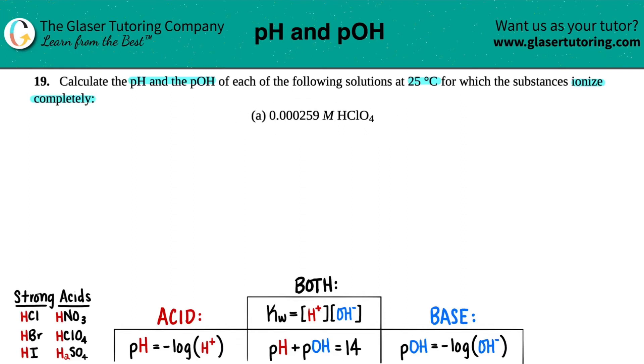So in this case, we just have to find the pH and the pOH of 0.000259 molarity of HClO4. Now, they did give us a little hint here. They said that it's going to completely ionize, but you might not get that hint on a quiz or a test.